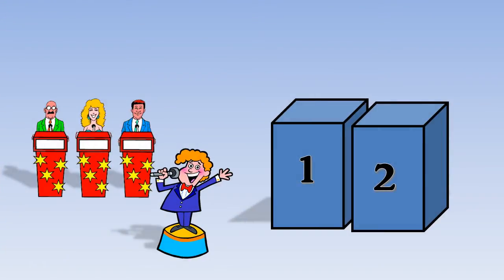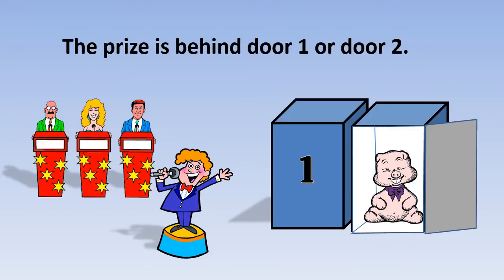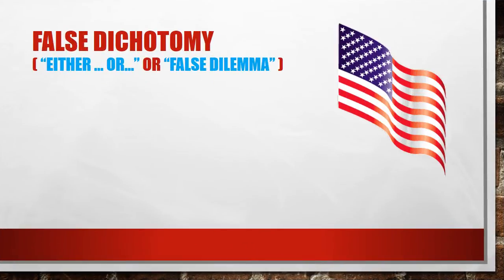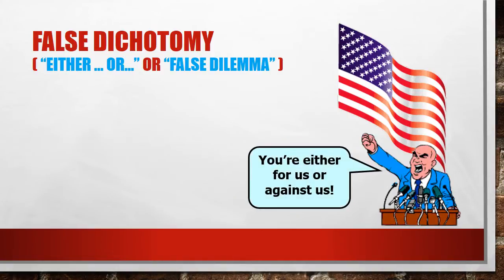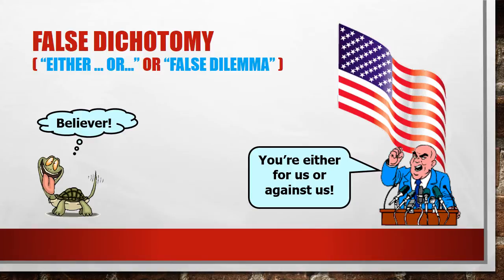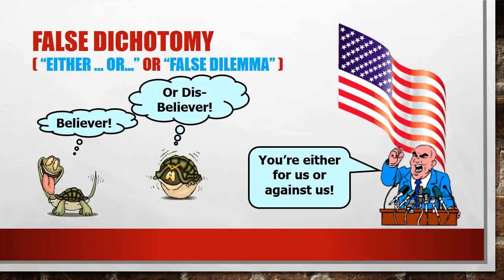Arguing from dilemmas is a pretty common form of reasoning. If somebody says the prize is behind door number one or door number two, and you know it's not behind door number two, common sense tells you the prize is probably behind door number one. However, there are cases in which the alternatives given are completely unlikely. In political debates, people say you're either for us or against us — but what about the alternative of being agnostic or undecided? Or if somebody says you either believe a certain doctrine or disbelieve it — that eliminates the possibility of neutrality or skepticism.